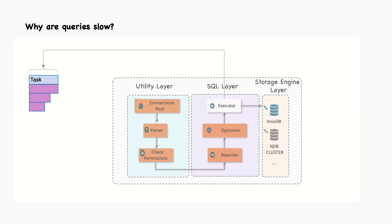In general, you can think of a query lifetime by mentally following the query through its sequence diagram from the client to the server, where it is parsed, planned, and executed, and then back again to the client. Execution is one of the most important stages in a query lifetime. It involves a lot of calls to the storage engine to retrieve rows, as well as post-retrieval operations such as grouping and sorting.